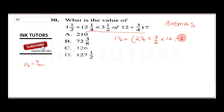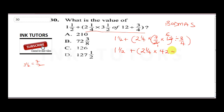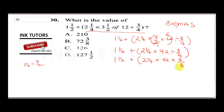We have 12 divided by three over four. Treating the 'of' first within the bracket: two into 12 gives 6, so this becomes one and a half plus two and one quarter times seven times 6 equals 42, divided by three over four. Applying BODMAS — division becomes multiplication — so we now have 42 times four over three.